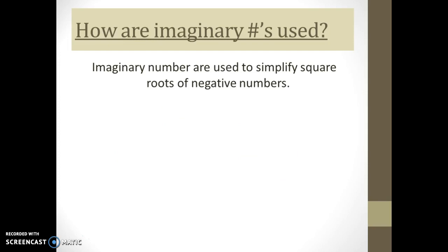Imaginary numbers are used to simplify the square root of negative numbers. For example, if we had the square root of negative nine, we could think of it as the square root of negative one times nine — factoring the negative one out. Then we write it as two separate square roots: the square root of negative one times the square root of nine. The square root of negative one is i, and the square root of nine is three, so the square root of negative nine equals three i.